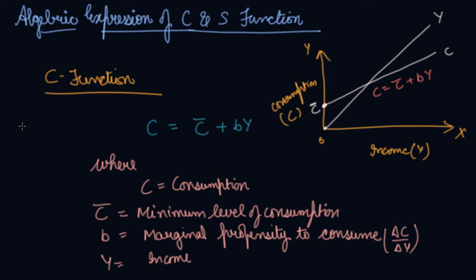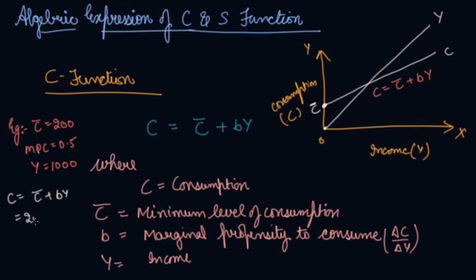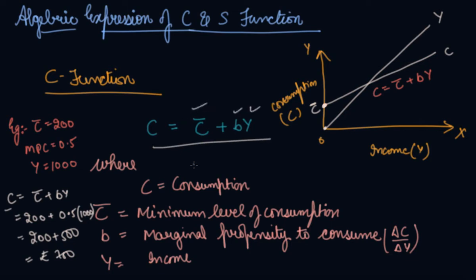Let's take an example. Suppose you are given c' is 200, your marginal propensity to consume is 0.5, and your income is 1,000. So you can find out your consumption. Consumption will be equal to c' plus b into y, which means 200 plus 0.5 into 1,000, which is 200 plus 500, which is rupees 700 crores. This is your consumption, and this way you can find out consumption when these three values are given to you.